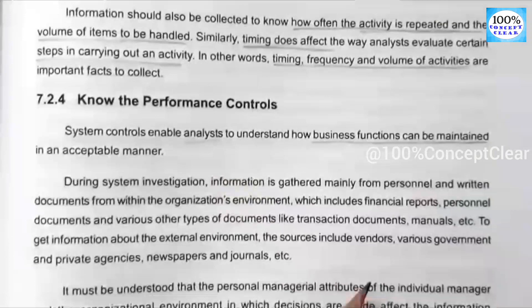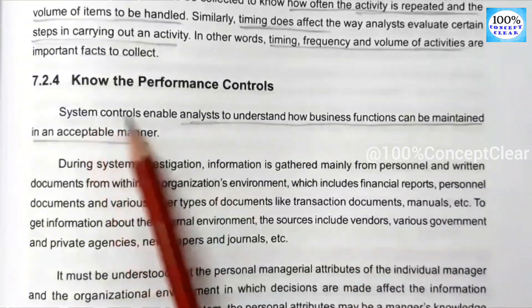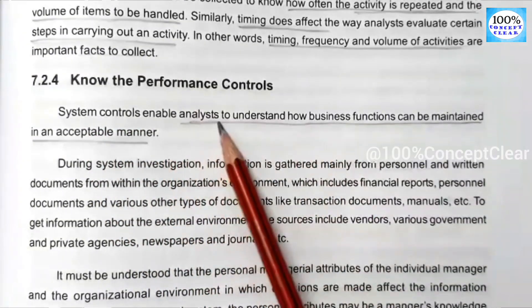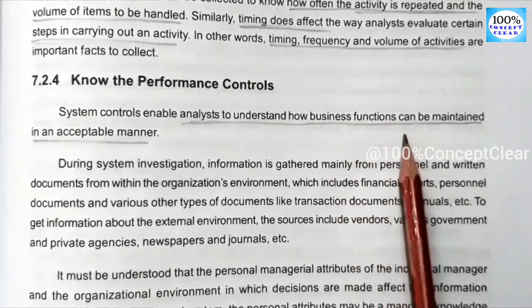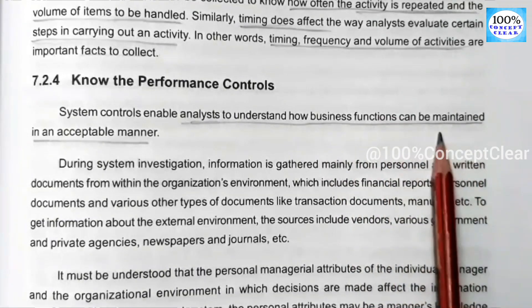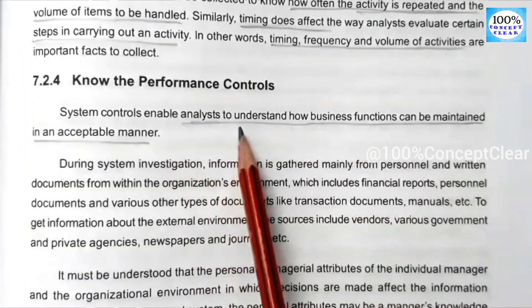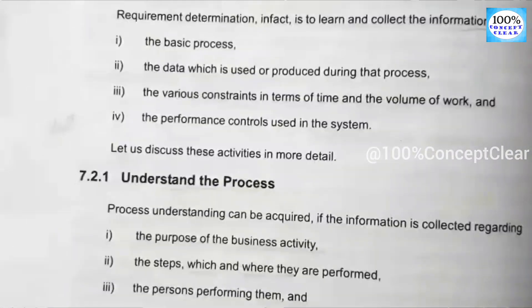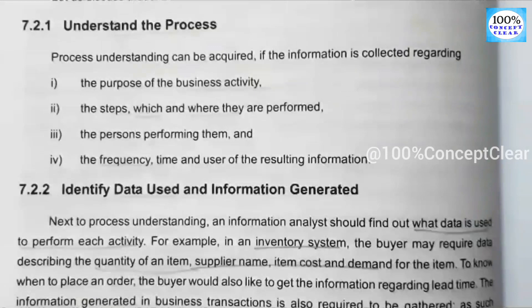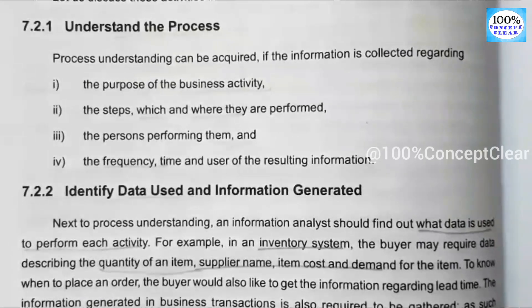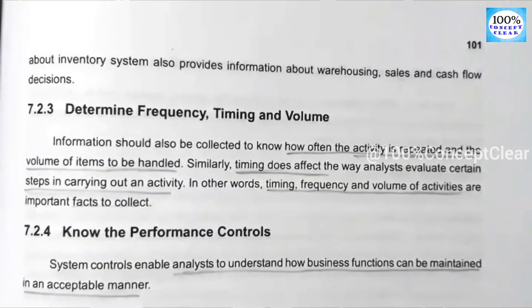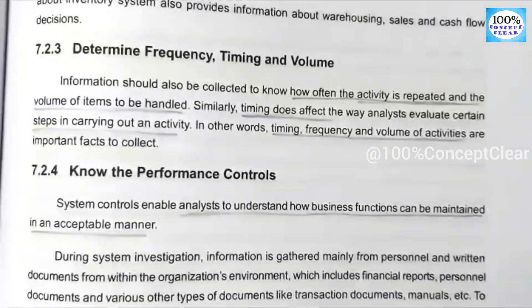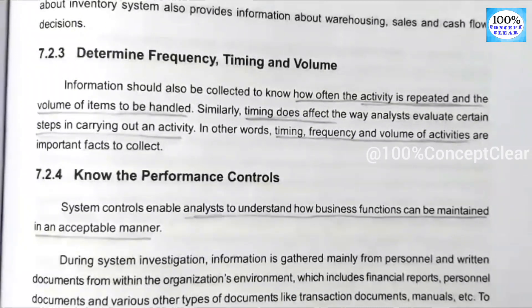The fourth step is to know the performance controls — system control and system analysis in business functions. So in summary, the four steps in requirement determination are: understand the process, identify data used and information generated, determine frequency, timing and volume, and know the performance controls.